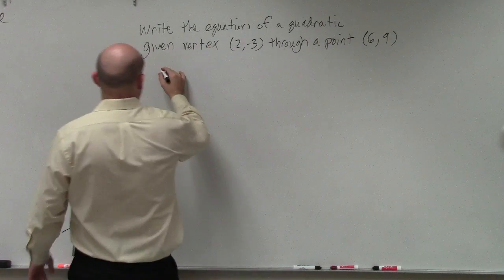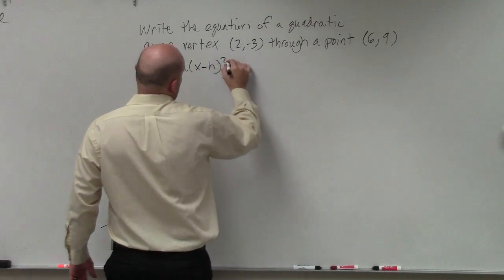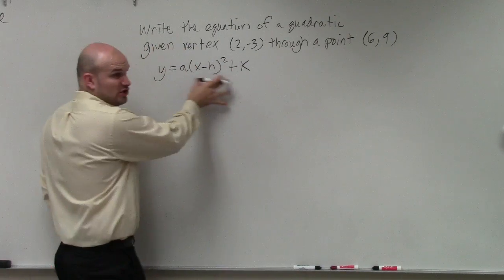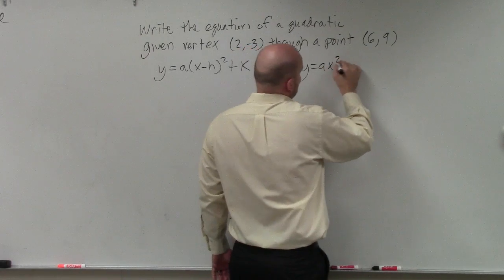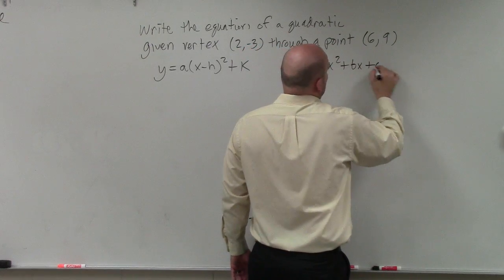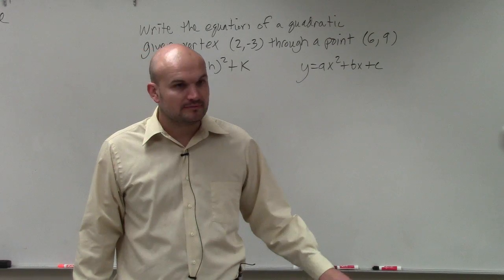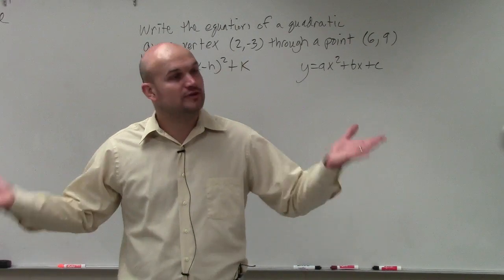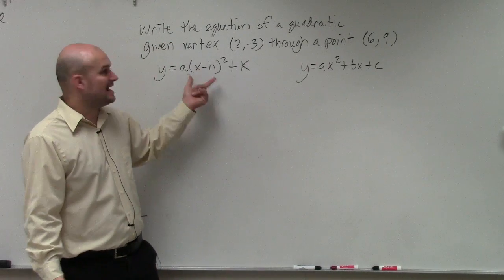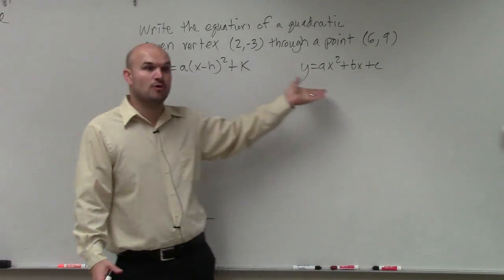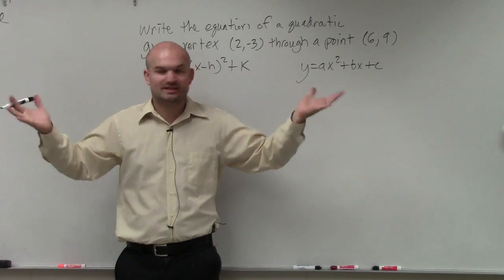we know that y equals a times x minus h squared plus k is vertex form, right? And y equals ax squared plus bx plus c is going to be standard form. Hopefully, you guys are familiar with how to go from standard form to vertex form, and how to graph if it's in vertex form or if it's in standard form. That should be basically the whole what this chapter is about.